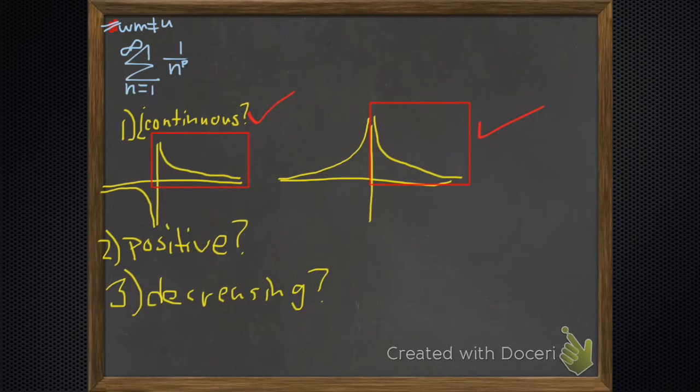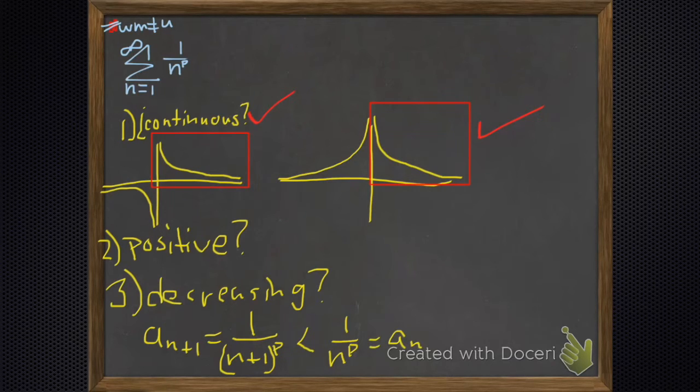We need to show that it's decreasing. How? We look at the next term, a_{n+1}, and we wonder which one's bigger? Is this one bigger, or is it this one?